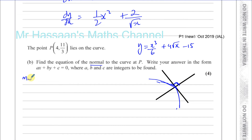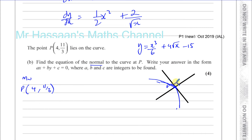To find the equation of the normal to the curve, we need to find the gradient of the normal and a point on the line. To find the equation of a straight line, you need its gradient and a point on the line. The point P is on the curve, and the normal passes through that point, so P(4, 11/3) is a point on the normal. To find the gradient of the normal, we first need the gradient of the curve at point P, which is found by using the differential.